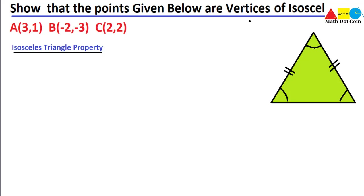Let's start with the property we can utilize in this problem. Since we are just given the vertices of the triangle, the property we can use is that the length of any two sides are equal — in an isosceles triangle, the length of any two sides are equal.